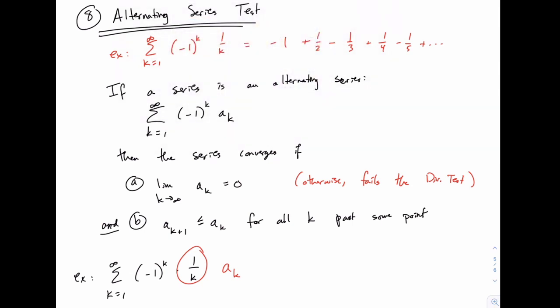The alternating series test says that this series will converge if it fits two criteria. First, the terms have to be approaching zero as you go. So the limit as k goes to infinity of that non-alternating part has to be zero. And of course if that fails, then this fails the divergence test. But also, they have to be converging to zero in a specific way. Specifically,